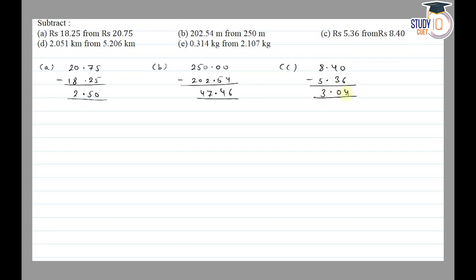Part (d) is 5.206 and 2.051 subtract. 5.206 minus 2.051. 6 minus 1 is 5. 0 minus 5, we borrow, so 10 minus 5 is 5. 1 minus 0 is 1. 5 minus 2 is equal to 3. So the answer is 3.155.